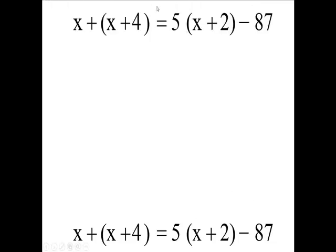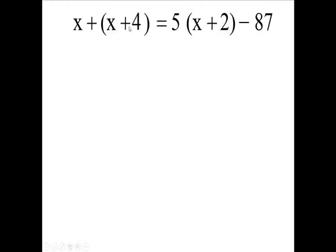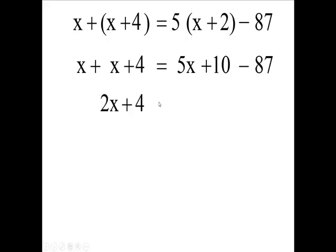So let's copy that up here. And we'll get rid of my parentheses. To do that, we're going to go five times x plus five times two. And don't forget your negative 87. So x and x is 2x. That's 5x minus 77.